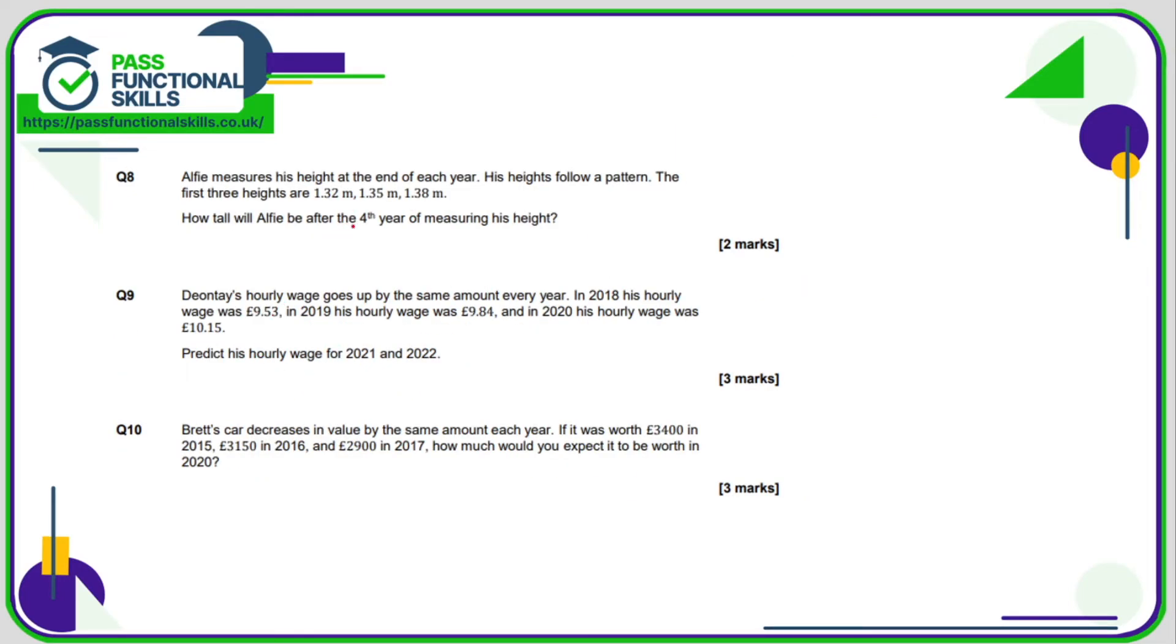So Alfie's height is 1.32, then 1.35, then 1.38, so he's gaining 3 centimeters, so if we add another 0.03 onto 1.38, then we're going to get his new height of 1.41 meters.